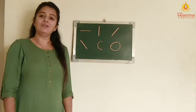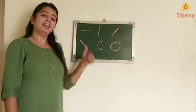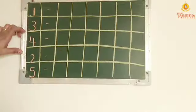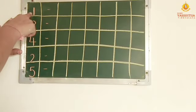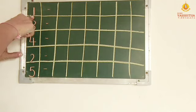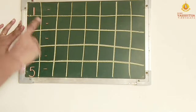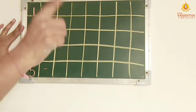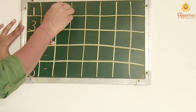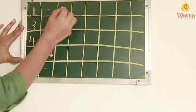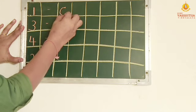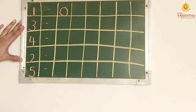Now, let's start our activity. So children, this is number 1. So children, make 1 circle beside it. 1, like this. Okay?